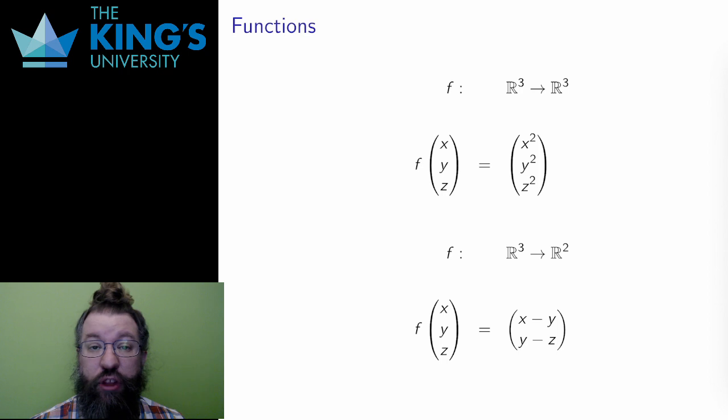Here are two examples. The first example goes from R³ to R³. When the domain is the same this way, I can call the function a transformation of R³. This function squares all the components of a vector. It's a function. Its input is a vector, it does something to that vector, and its output is also a vector.